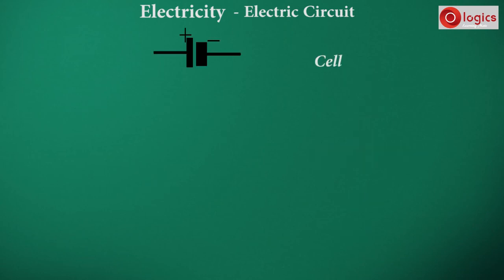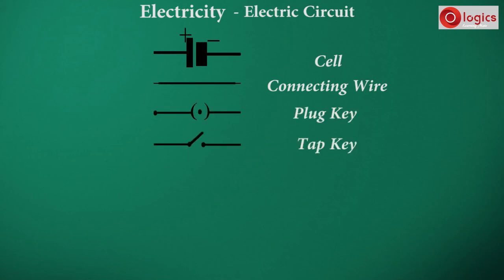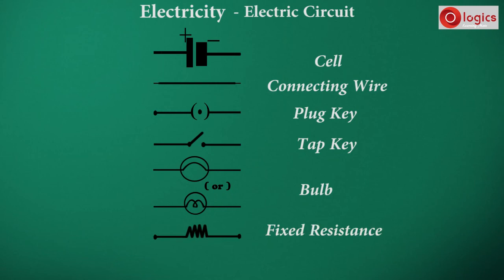Let us summarize commonly used electric components: cell, connecting wire, plug key, tab key, bulb, fixed resistance, fuse.